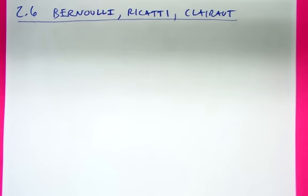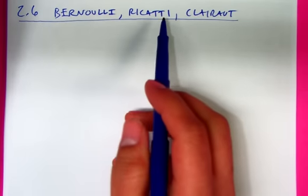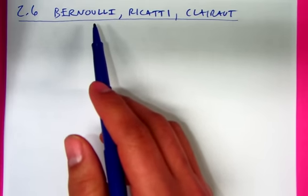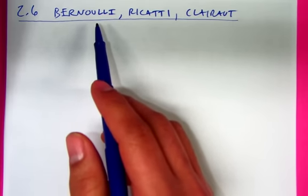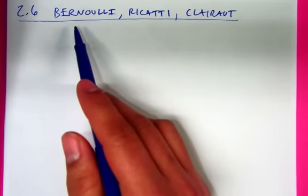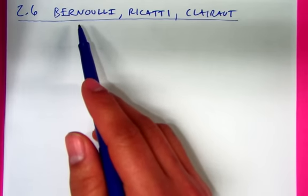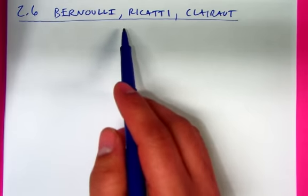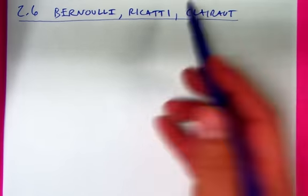The order in which these names are listed is probably the order in which you should prepare for the next exam as far as this section is concerned. The first type, the Bernoulli differential equation, is by far the most important in this section. Riccati is a little bit important. Clairaut is just in there, so we're going to basically throw it in.